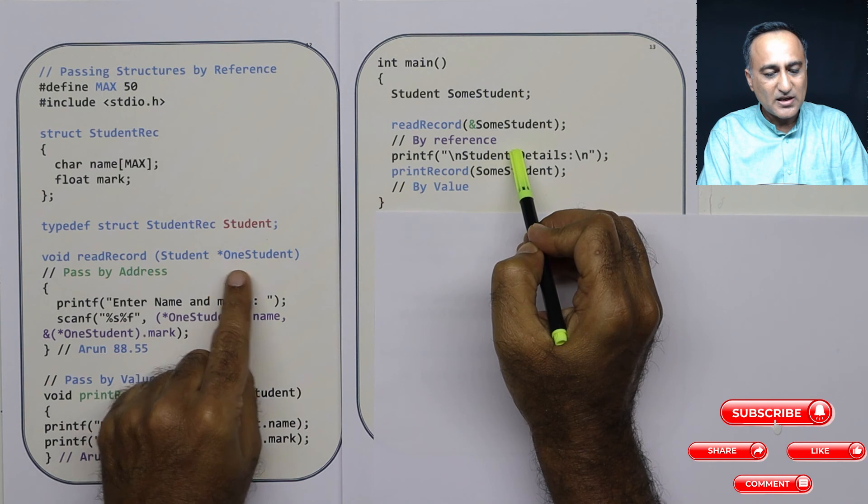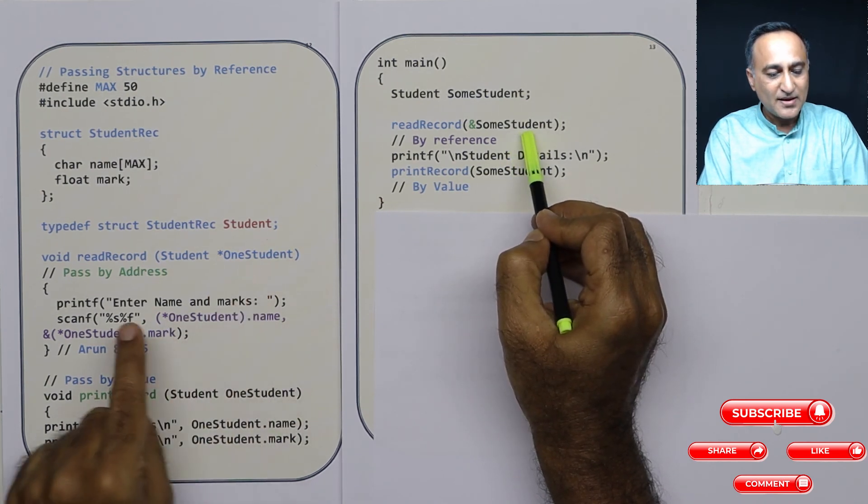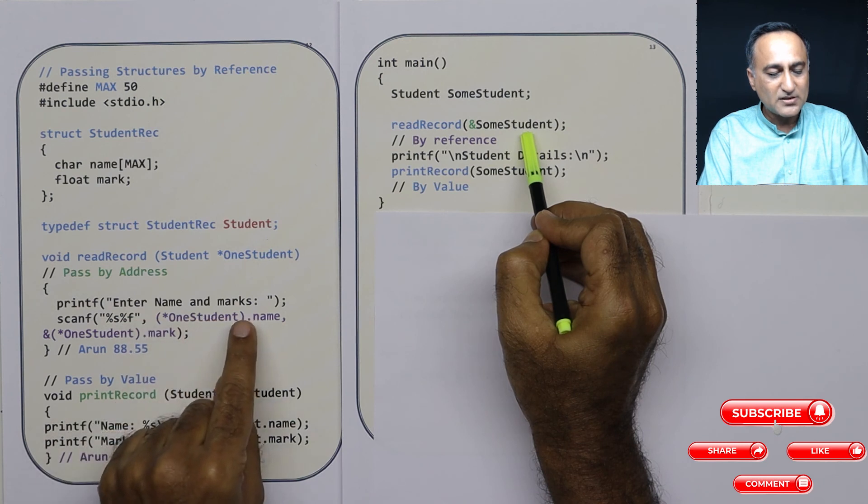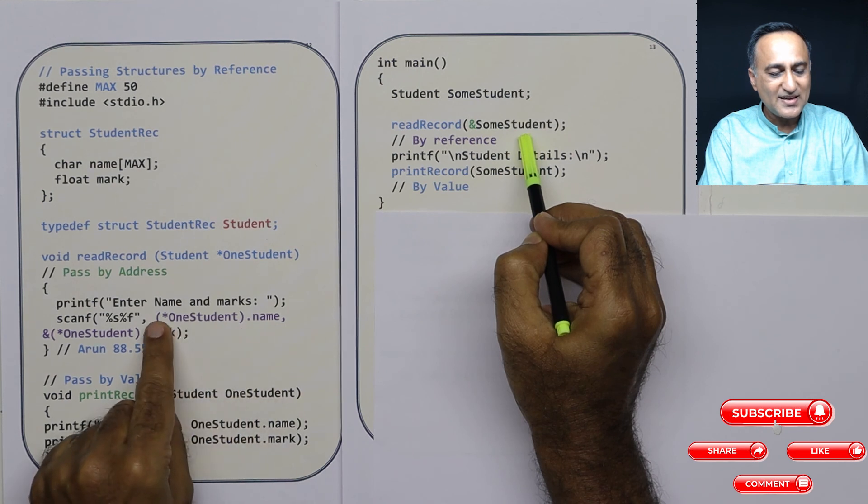Here read record star one student indicates that this parameter has been sent by address. I am entering the name and marks. So I have put this in parenthesis because precedence of dot is higher than star.